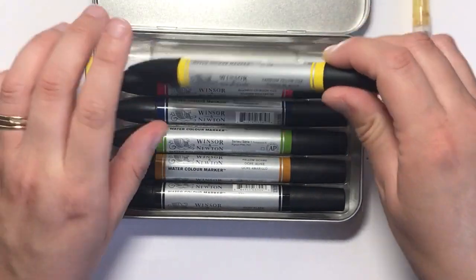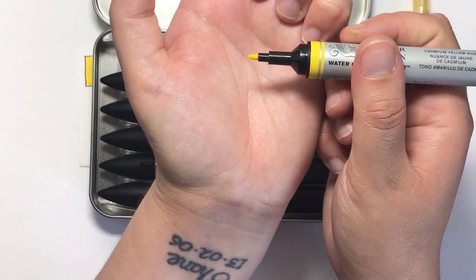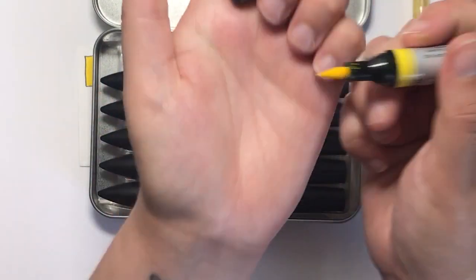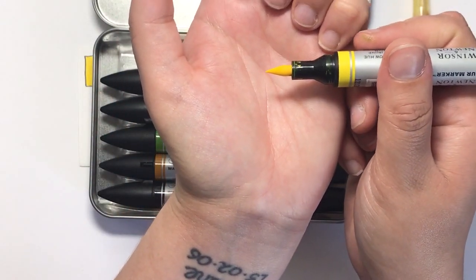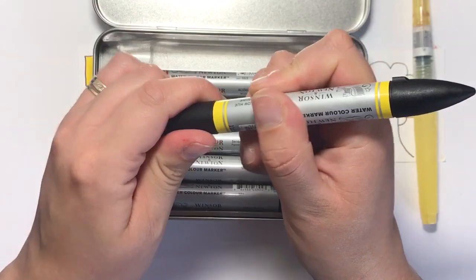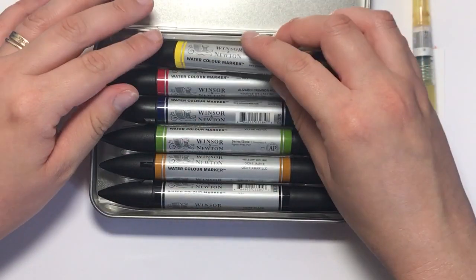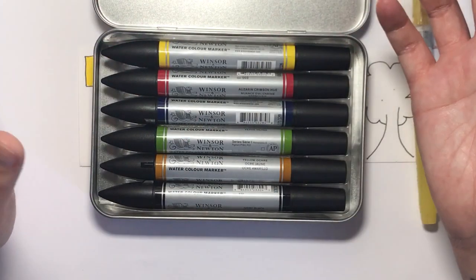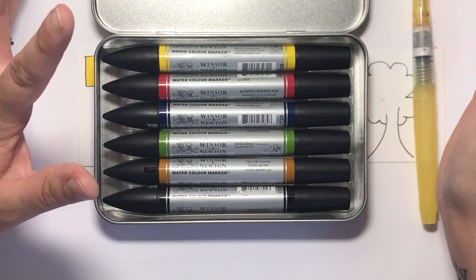They have two different tips: a bullet nib and a very thick brush nib, which is an absolute dream to work with. The colour output is so smooth and it feels really thick like paint when you're colouring, which is of course why they're called watercolour markers, because you can activate them with water.